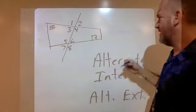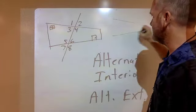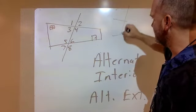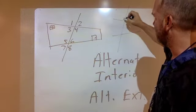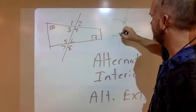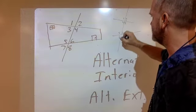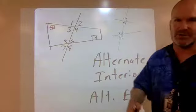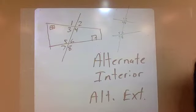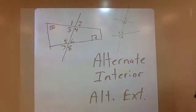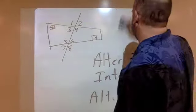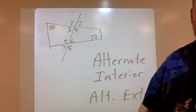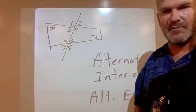The reason we have 8 angles is because we had 2 lines and we crossed them with a third line, creating angles 1, 2, 3, 4, 5, 6, 7, 8. That third line is called a transversal. That's another piece of vocabulary you need to have, but let's get through interior and exterior first.